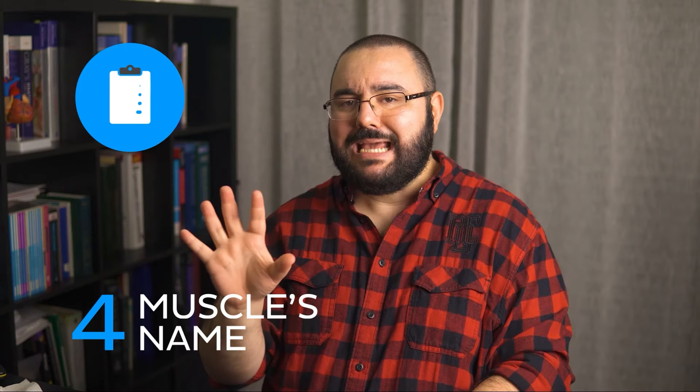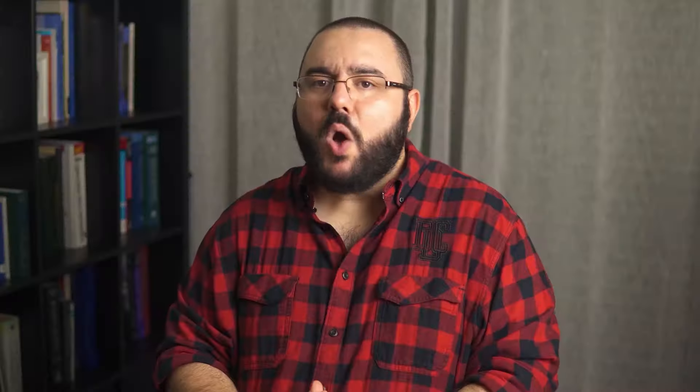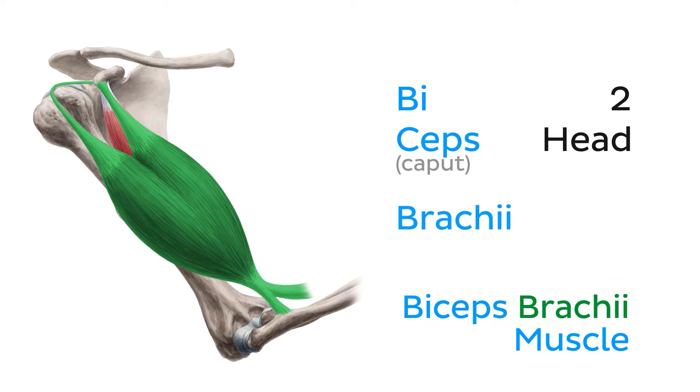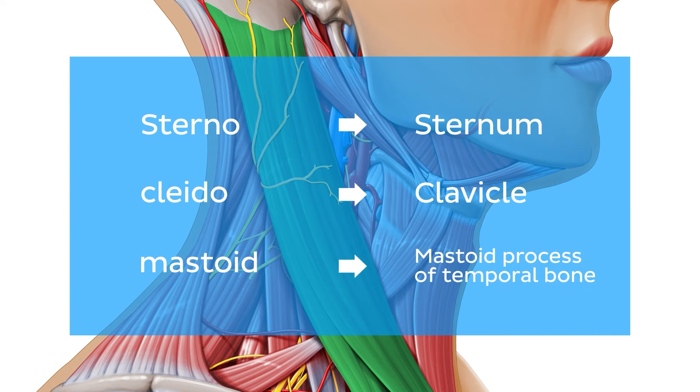Tip number four: take a look at each muscle's name. The name of a muscle can sometimes give us a hint to its attributes. For example, let's take a look at the biceps brachii muscle. 'Bi' means two, while 'ceps' comes from the Latin word 'caput,' meaning head. 'Brachii' is the Latin word for arm — therefore indicating that this is a two-headed muscle located on the arm. Some muscles even tell us what structures they attach to by their name, such as the sternocleidomastoid muscle, which attaches to the sternum, clavicle, and mastoid process of the temporal bone.